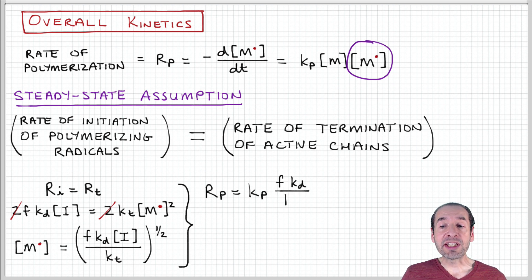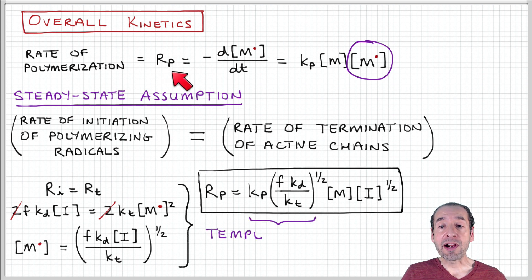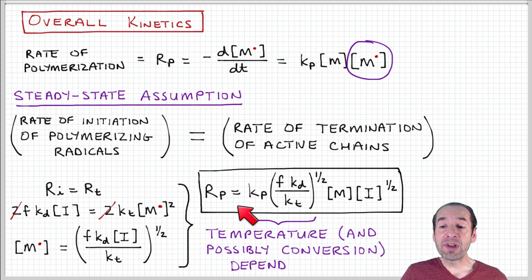The next step then is to plug this in into the expression for our rate of polymerization and we obtain a relationship like this. So the rate of polymerization involves some grouping of kinetic parameters times the concentration of monomer times the concentration of initiator to the one half.